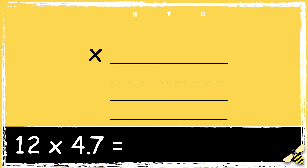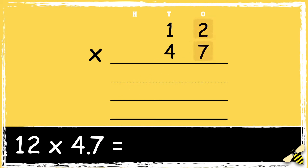So 12 multiplied by 47. 7 times 2 is 14 — we carry the 1 below in the tens column as it represents 10. Then we multiply 7 by 1 ten: 7 times 1 is 7. We need to add the 1 below, so 7 add 1 is 8.